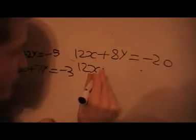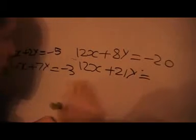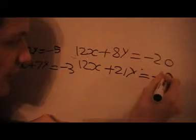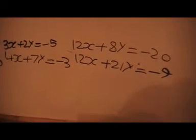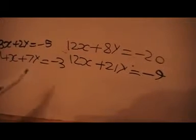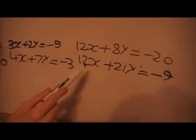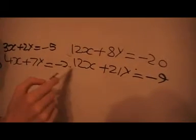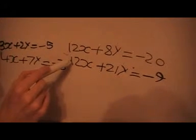And then we're going to multiply it by 3, so we'll get plus 21y equals minus 9. And these are our equations here. And we're going to eliminate these by subtracting, because 12x minus 12x makes 0.